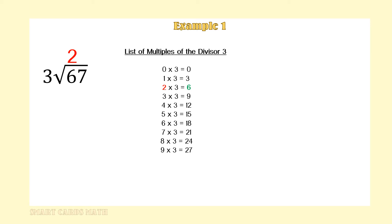So 2 will be the first digit in the quotient. 2 times 3 equals 6. Write the 6 under the 6 in the dividend and subtract — we get 0. Bring down the 7. Can we get a group of 3 out of 7? Yes.